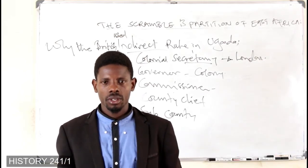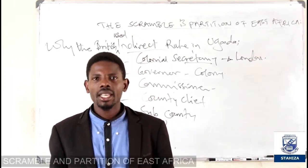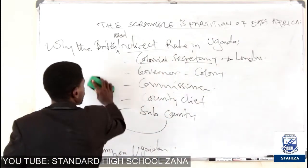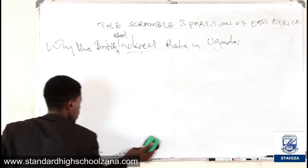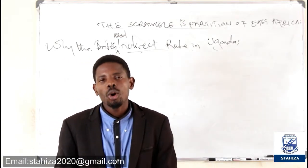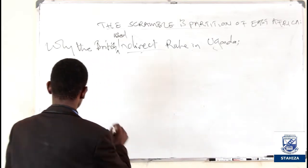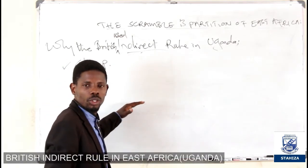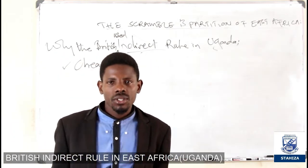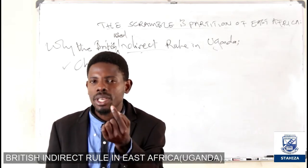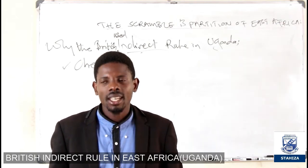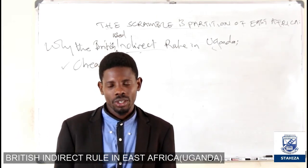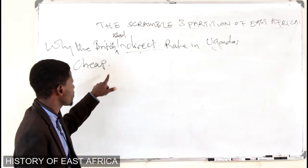Why did the British use indirect rule in Uganda? The first reason is that indirect rule was very cheap — it was economically affordable. All those people we talked about, the parish chiefs, the sub-county chiefs, were paid just a small amount, or sometimes given simple gifts and second-hand goods, which was affordable to the British, rather than using expensive British personnel.